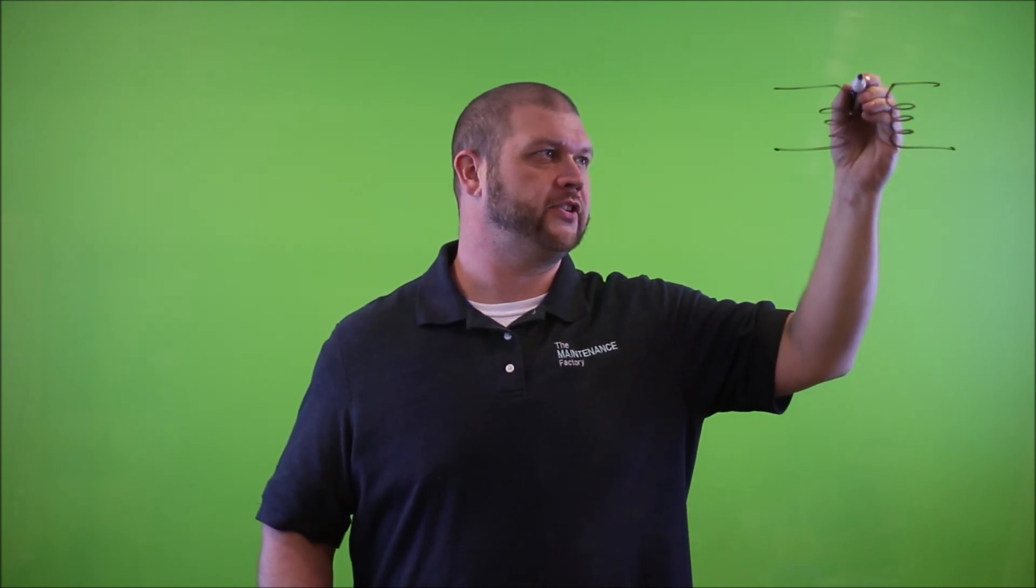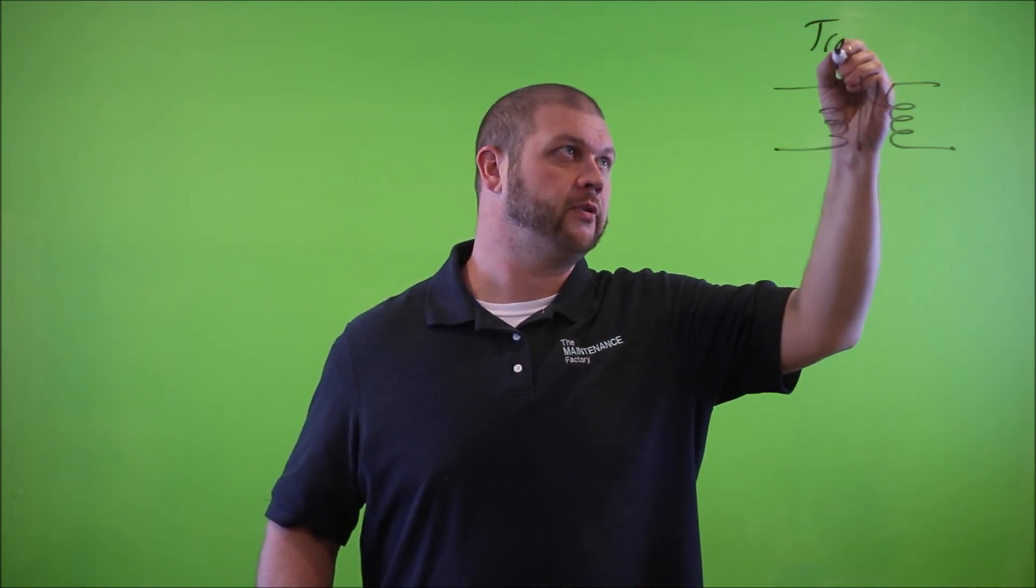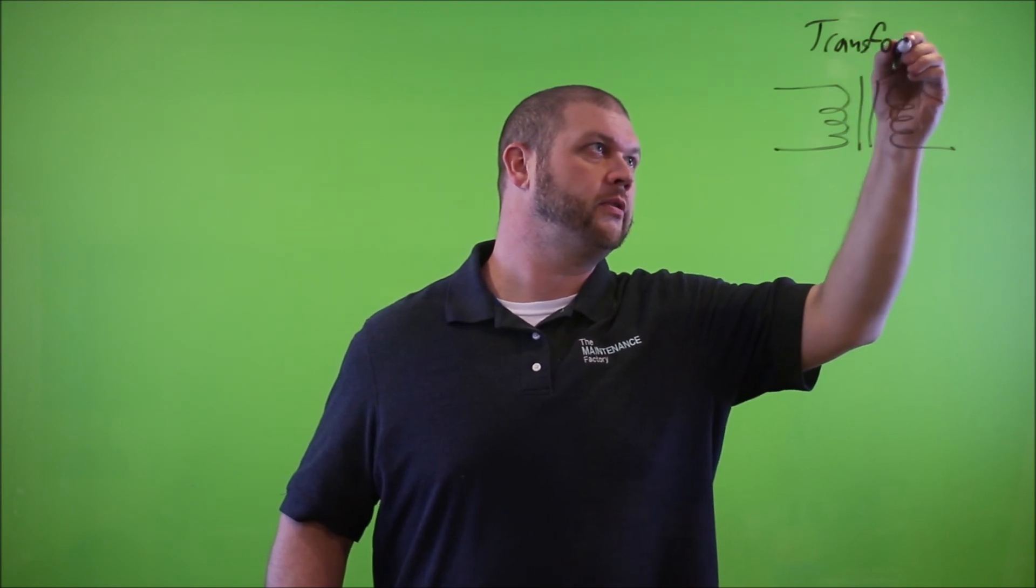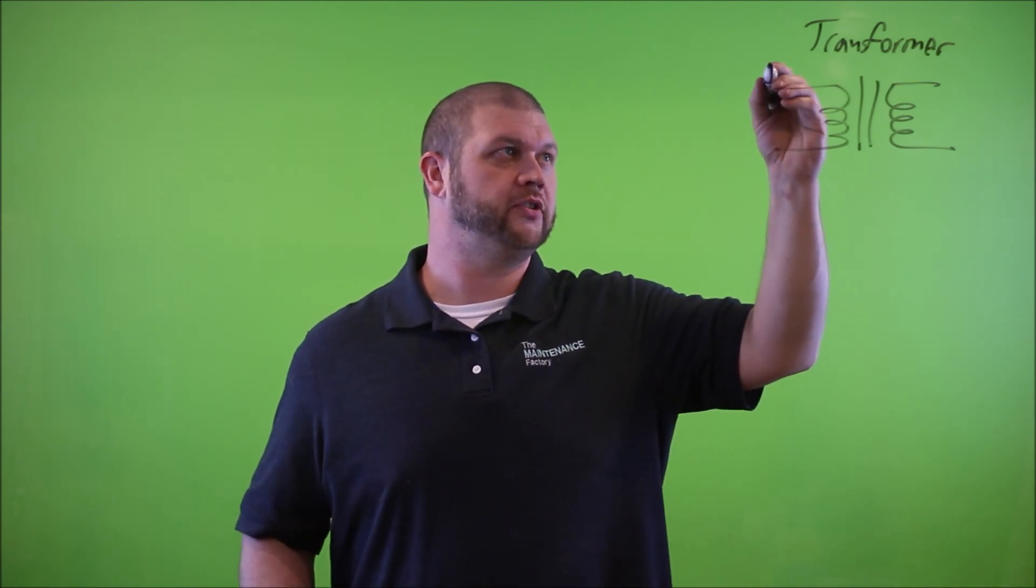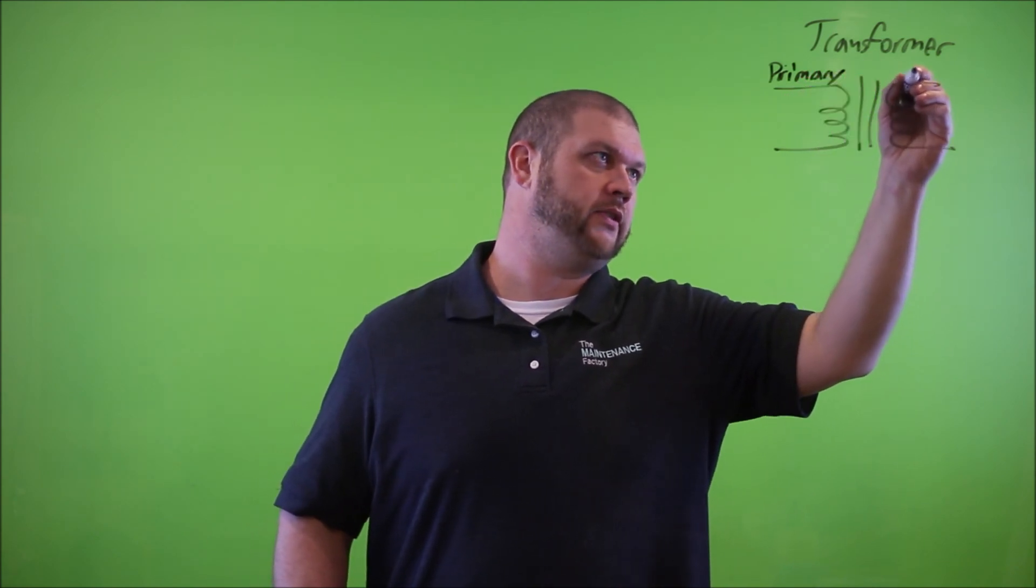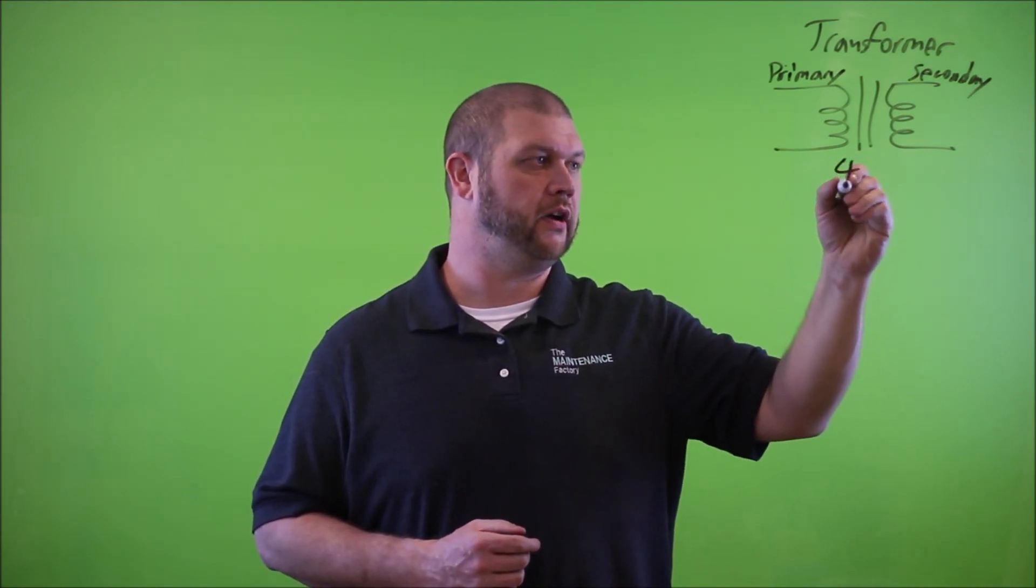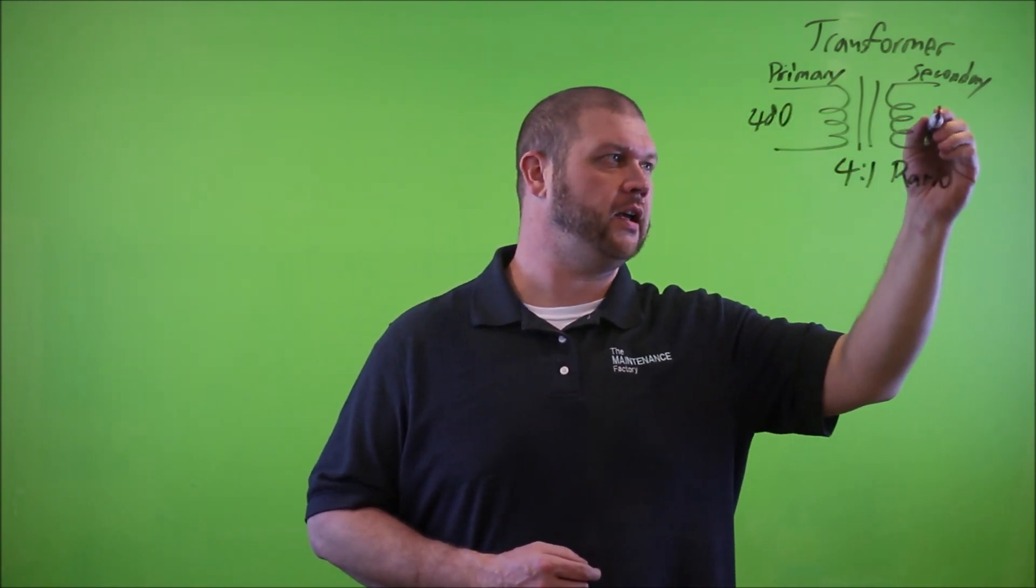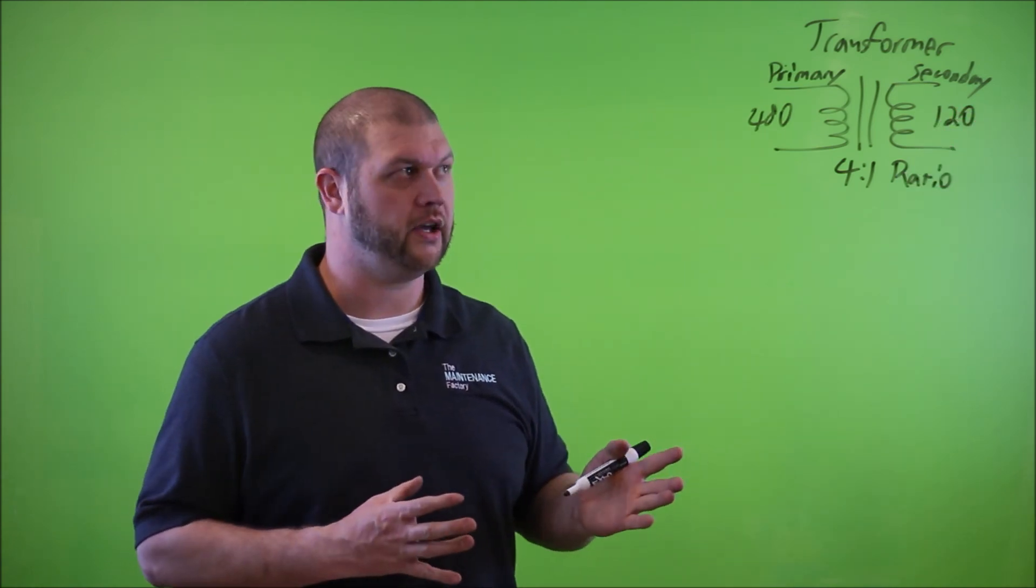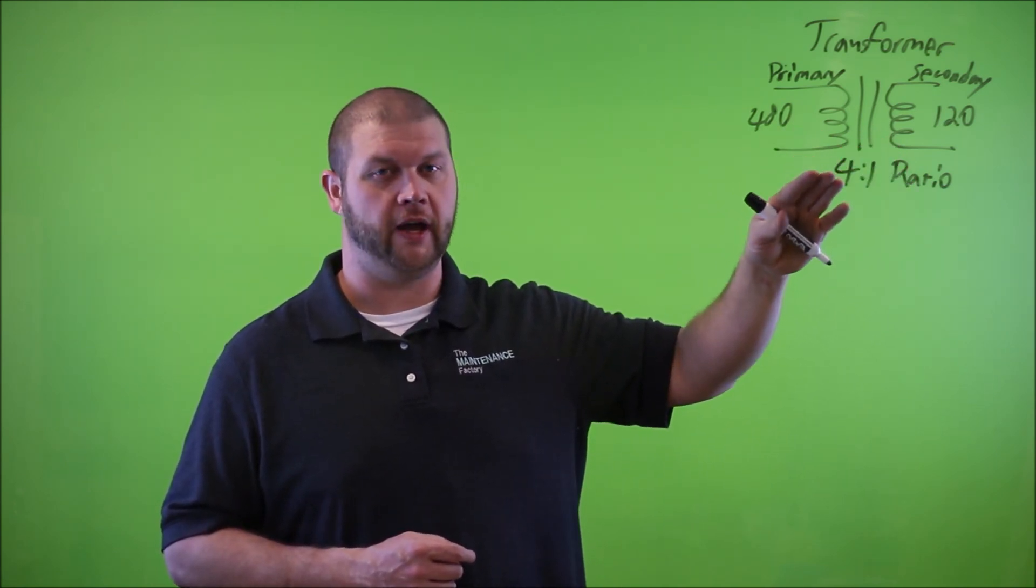The first symbol that I want to talk about is the transformer itself. This is a transformer symbol. The two bars denote that it's an iron core transformer. Transformers have two primary sections: one's called the primary winding and the secondary winding. In that video that I talked about, there is a four to one ratio transformer with 480 volts on the primary side and it steps down to 120 volts on the secondary side. This is a real simple single phase step down control transformer.